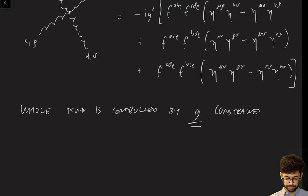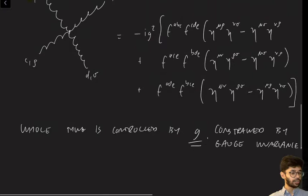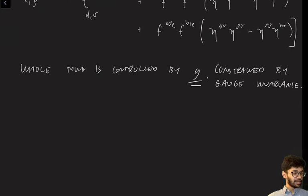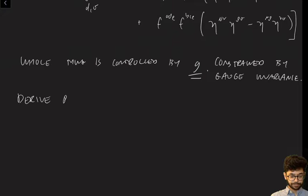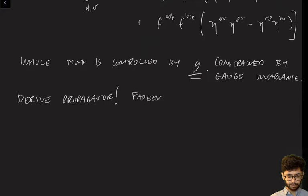Now that we have all the vertices worked out, we should quantize the theory. In particular, we want to derive the propagator, just as we did for the abelian gauge field. We're going to follow the same Faddeev-Popov steps that we did in the abelian case, but we'll see it's going to be a little more interesting this time — the same Faddeev-Popov procedure, but with a new wrinkle in the non-abelian case.